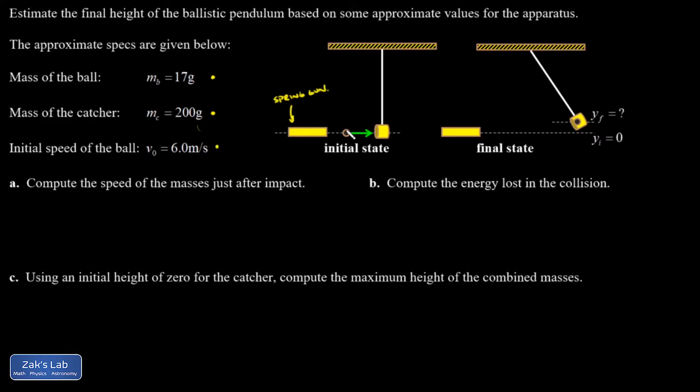A ballistic pendulum works like this: the ball impacts the target and is captured in a perfectly inelastic collision. Energy is lost in this collision. Then, once the ball and catcher reach a final velocity, they rise to a final height in a process that conserves energy. Let's get into the calculations.